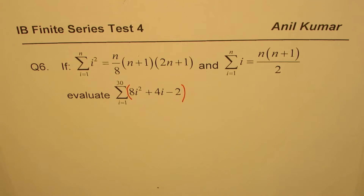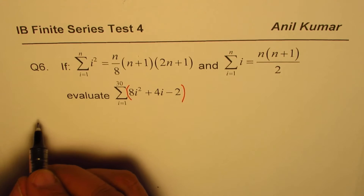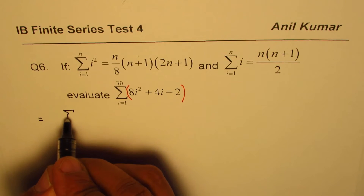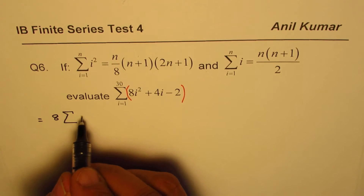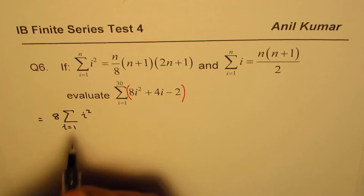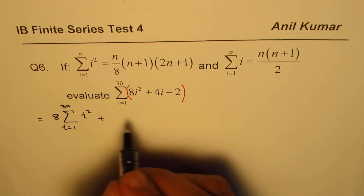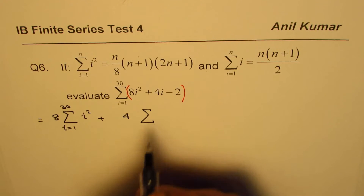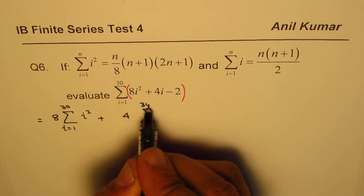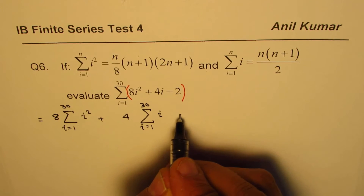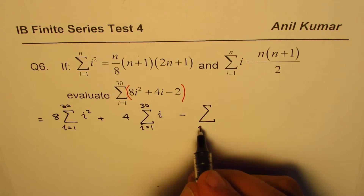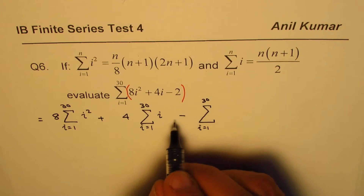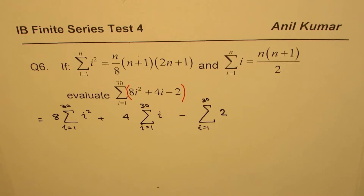Here is the solution. We write this as: 8 times the sum of i² where i goes from 1 to 30, plus 4 times the sum of i from 1 to 30, and for the last term we take minus outside and just write 2.